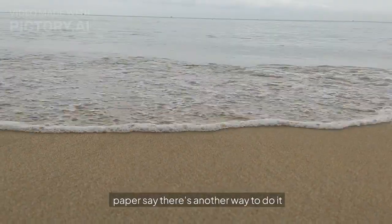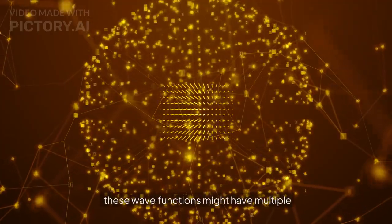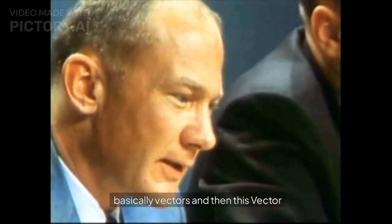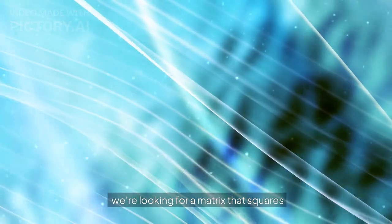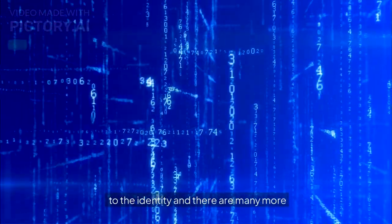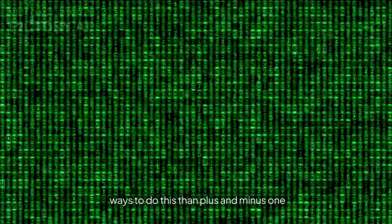The authors of the new paper say there's another way to do it. These wave functions might have multiple entries that they call modes. They're basically vectors. And then this factor here isn't a number, it's a matrix. Now we're looking for a matrix that squares to the identity. And there are many more ways to do this than plus and minus one. This is what they call paraparticles.